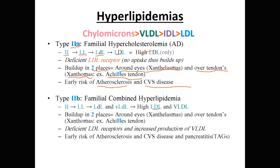Type 2b is familial combined hyperlipidemia. Using the same LDL mnemonic, 2b being the second letter, two things are elevated: high LDL and high VLDL. The deficiency includes not just reduced LDL receptors but also increased production of VLDL. This leads to atherosclerosis and cardiovascular disease, and with high VLDL meaning high triglycerides, you also get pancreatitis. The pancreatitis clue differentiates type 2b from type 2a.